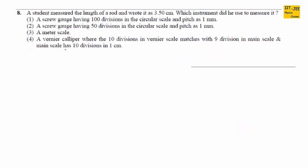Now let's solve a problem based on vernier calipers and screw gauge. A student measured the length of a rod and wrote it as 3.50 centimeter. All numbers here are significant — including the zero — which means the instrument can measure up to the hundredths place. Therefore, the least count of the instrument must be 0.01 centimeter.